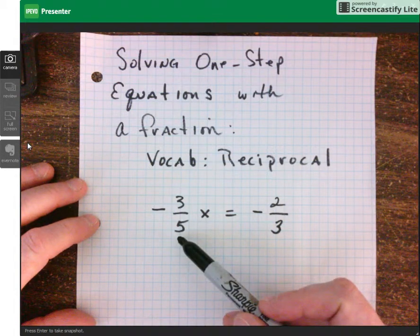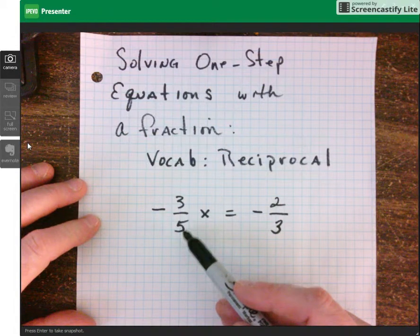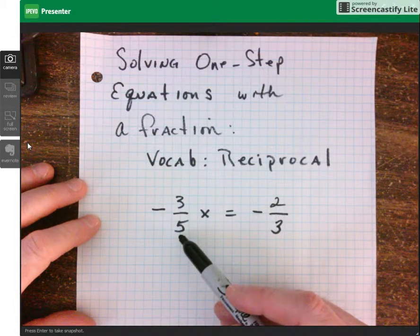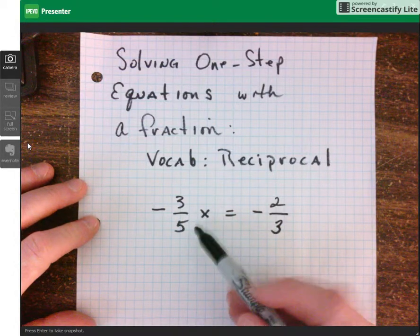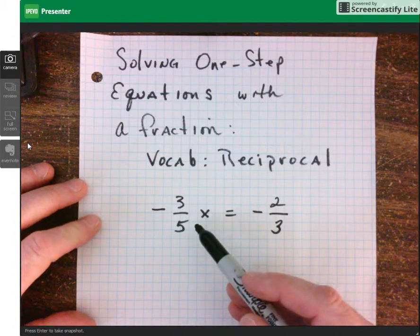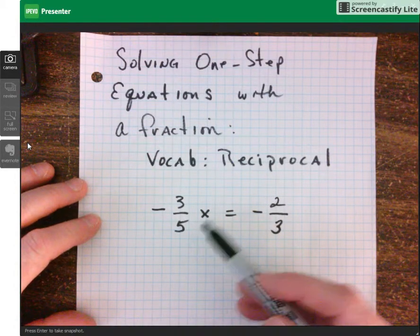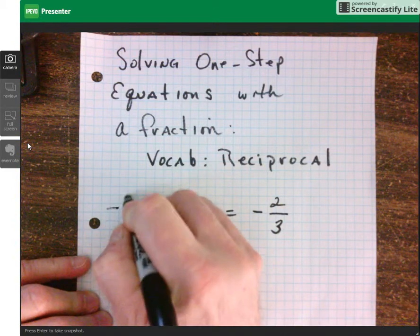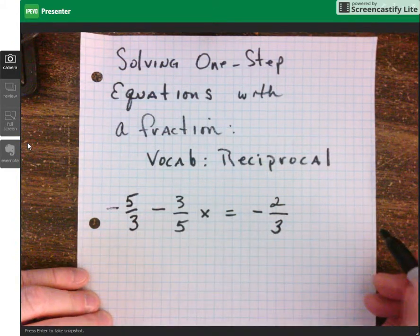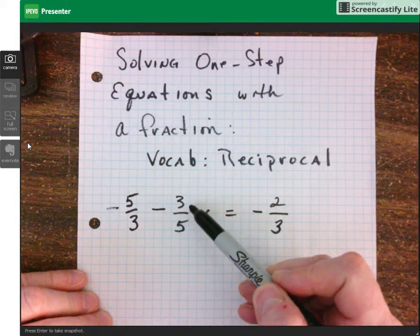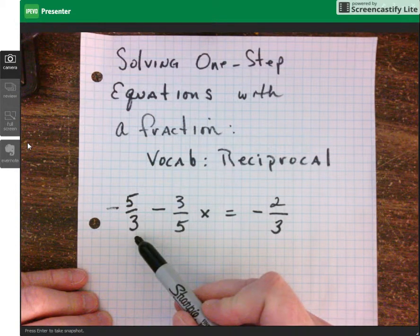Now traditionally, I would want to divide negative 3 fifths away from both sides, because the negative 3 fifths is multiplying the x. And our inverse operation says to use division to undo multiplication. However, we cannot divide fractions. So what we do is we multiply by something called the reciprocal. And you can see that my coefficient is negative 3 over 5, and therefore the reciprocal is negative 5 over 3.